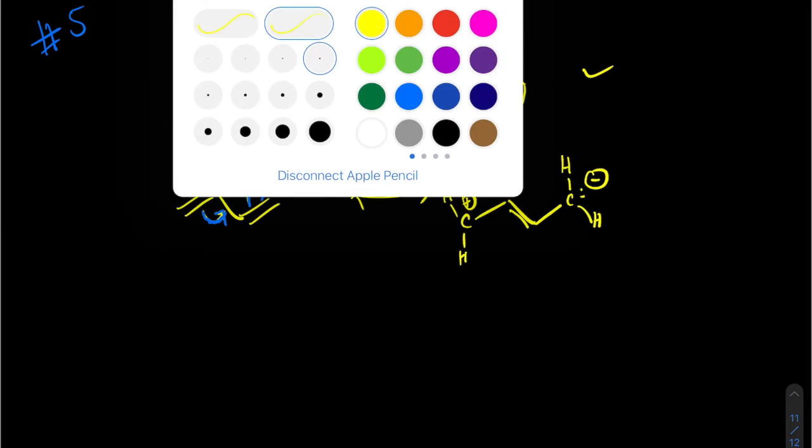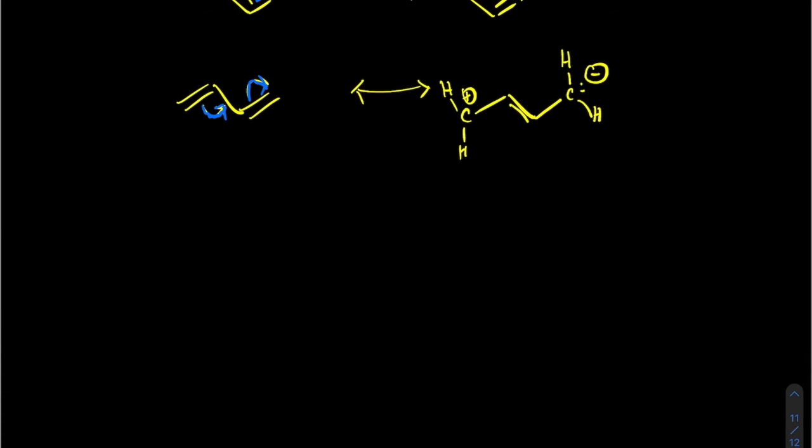So let's look at some examples. If you have a ring with a hetero atom, don't worry about it. Just treat it just like a benzene, which we did before. You might think that this is a lone pair next to a pi bond, but that lone pair is not a p orbital.